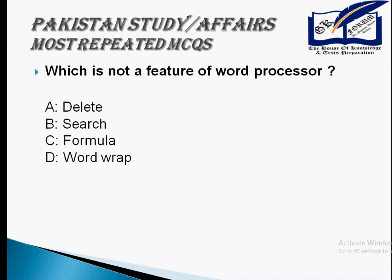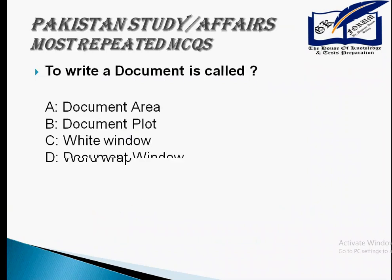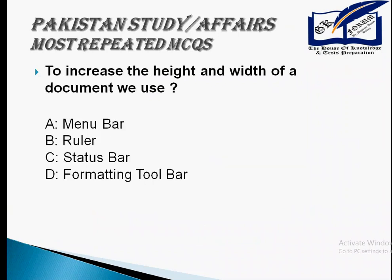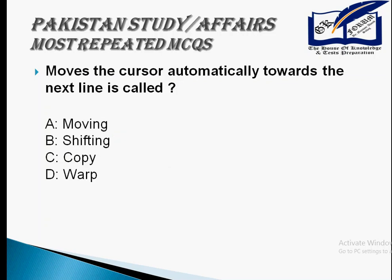Which is not a feature of a word processor? It's a formula. To write a document is called its document window. To increase the height and width of a document, we use its ruler. Moving the cursor automatically towards the next line is called its word wrap.